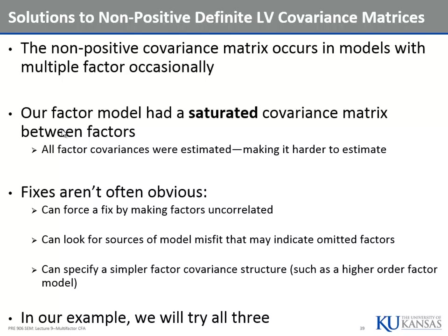How many of you have heard of hierarchical linear models? Multilevel models? Mixed models? The random effects covariance matrix, which is what we call the factor covariance matrix, can blow up sometimes too. So what we're going to try to fix this is first make the factors uncorrelated — force them to zero correlation — because that thing is invertible. It's not going to fit well because the factors are correlated, but it will be invertible and help us look for model misfit.